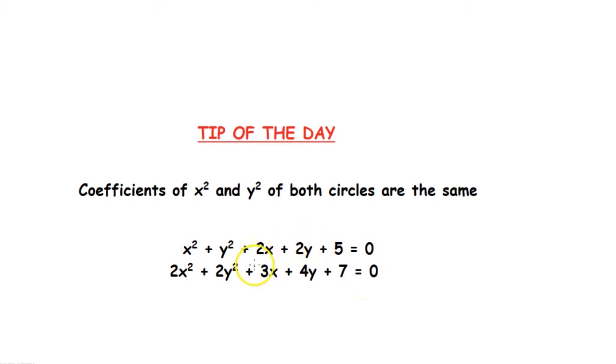we cannot immediately subtract S1 - S2 = 0. What we must do is either multiply the whole of the first equation by 2 and then deduct the second equation, or divide the whole of the second equation by 2 and then subtract the first equation. That way we can get the equation of the common chord.